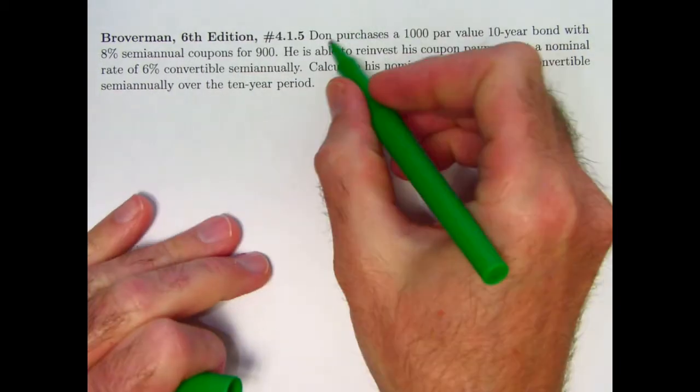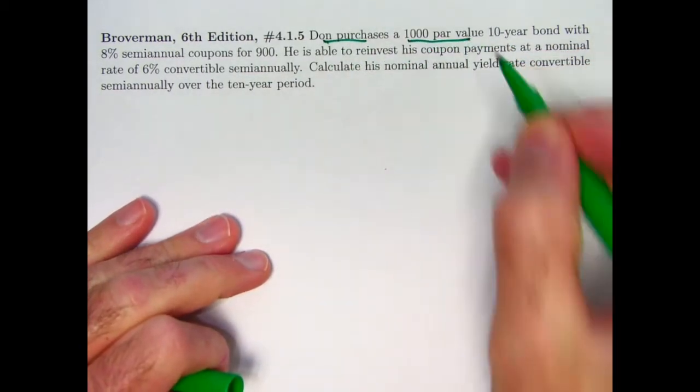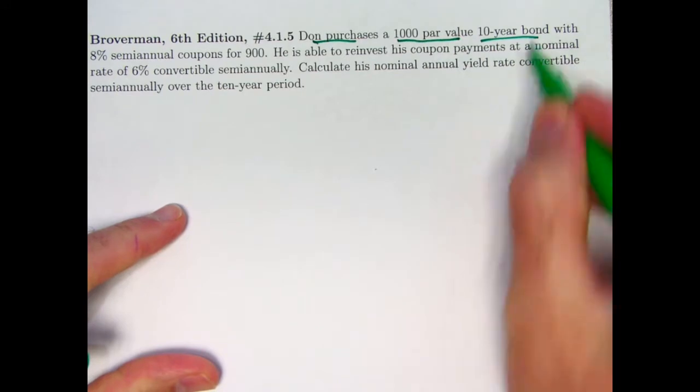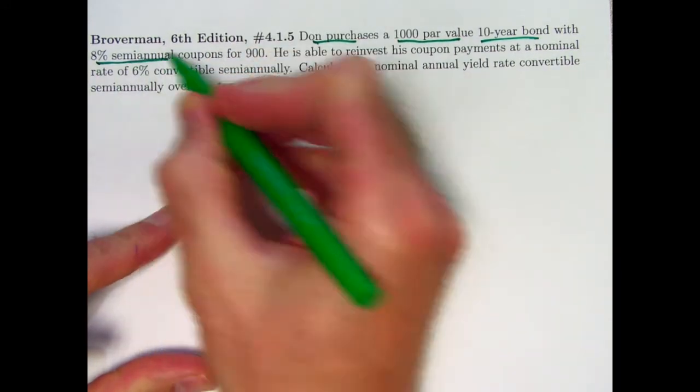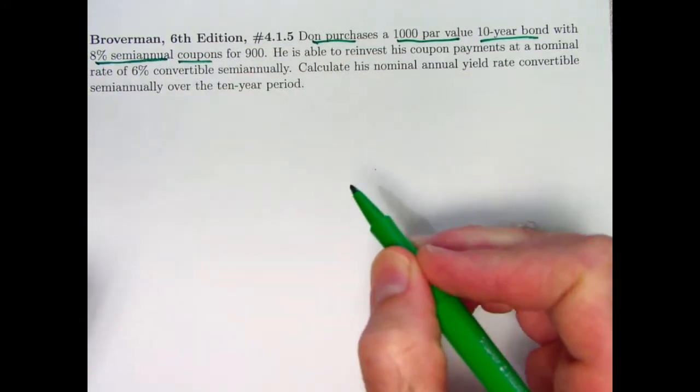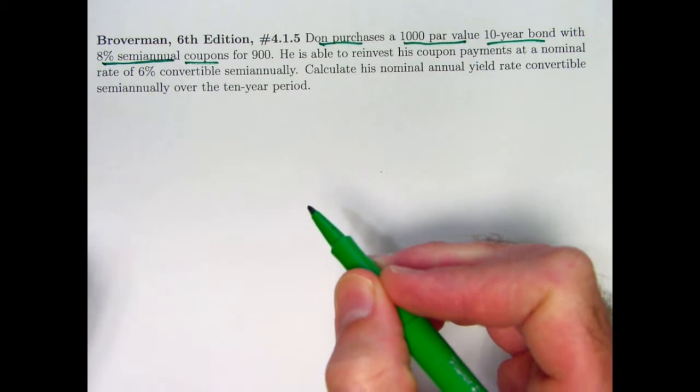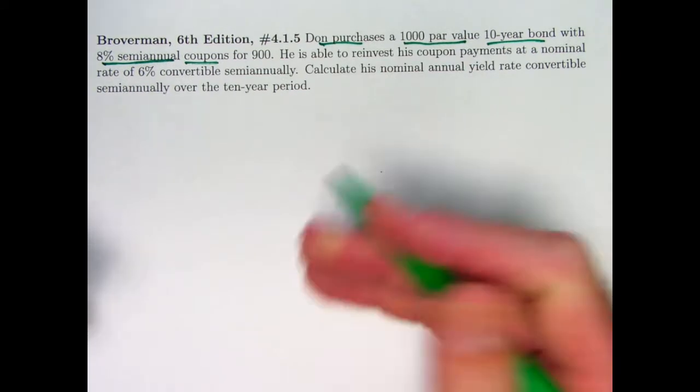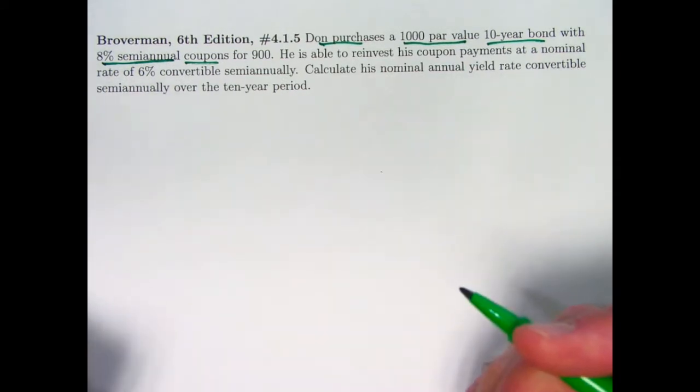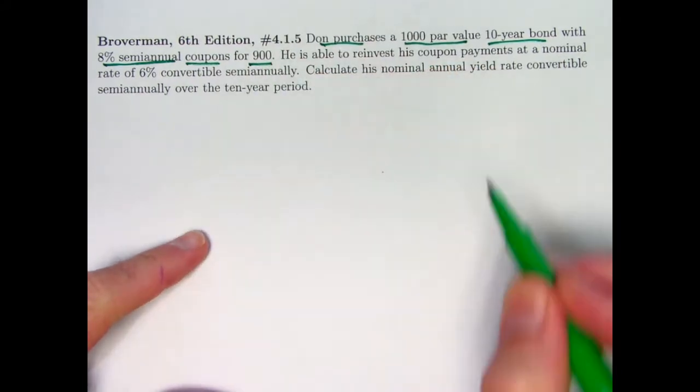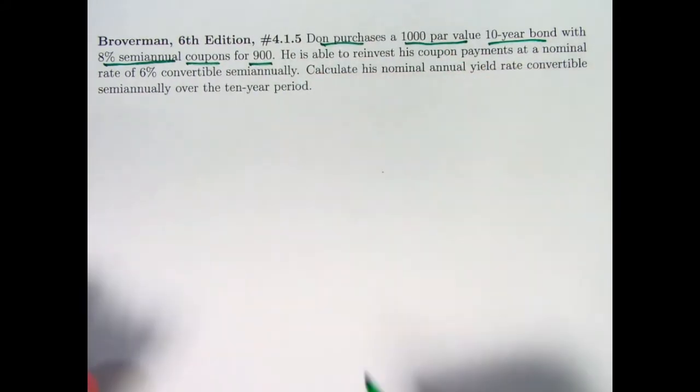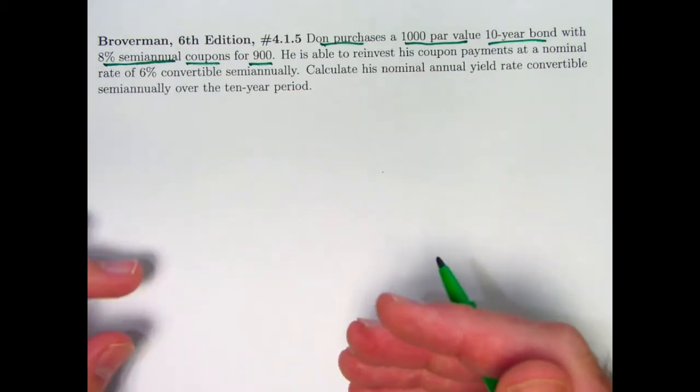So Don purchases a 1000 par value or face value bond. It's a 10-year bond with, as usual, semi-annual coupons at 8% semi-annual rate. That would be the nominal rate. The actual effective rate would be half of that, 4%. The purchase price is 900. The face value and par value there of 1000 would be the same as the redemption value. That's not stated, but that would be the assumed thing if they don't say otherwise.